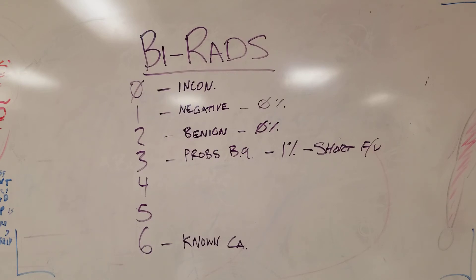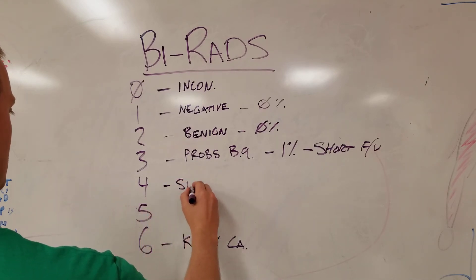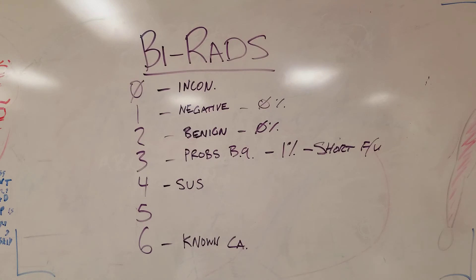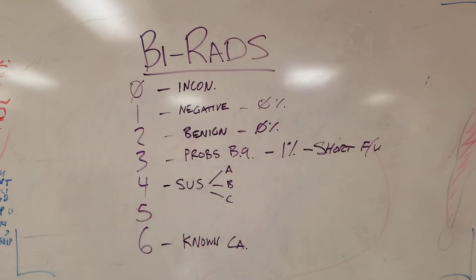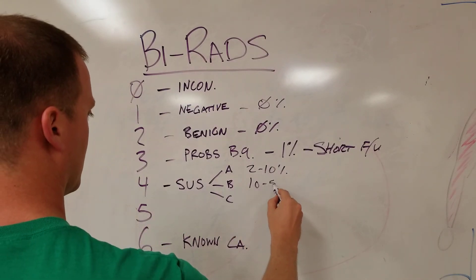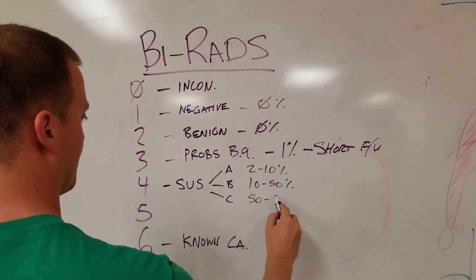The next thing up would be suspicious. A suspicious lesion—you don't know—there's different subcategories here. Four is the only one that's like this, but it has 4A, 4B, and 4C. Each one of these carries a different risk of malignancy. The 4A is about 2 to 10 percent of having a cancer inside of it, 4B is 10 to 50, and the C is 50 to 95.